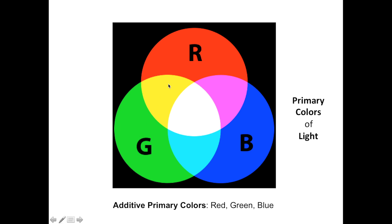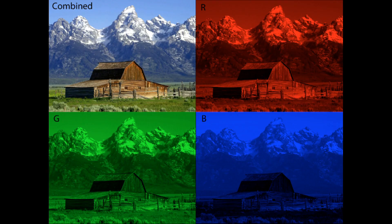When red and blue are mixed they give magenta; blue and green combined gives cyan. Yellow, magenta, and cyan are the subtractive primaries.